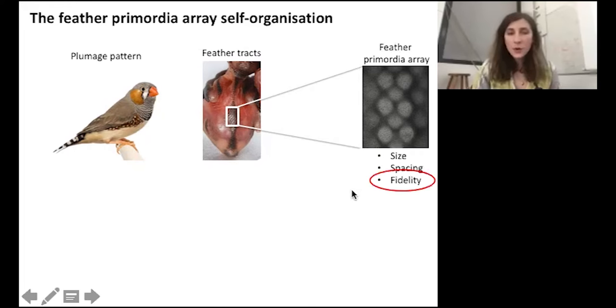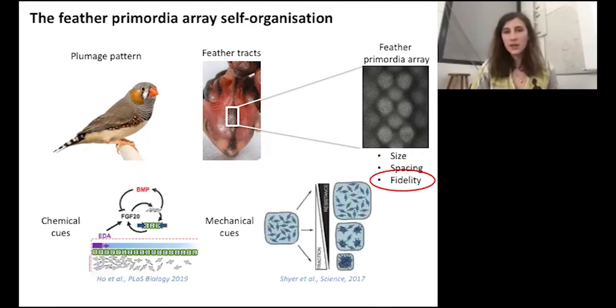Today I will focus on the pattern fidelity. It is set during the embryonic development and results from the self-organization of the skin cells into an array of feather precursors or primordia.